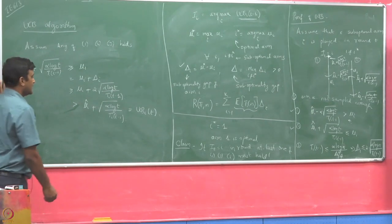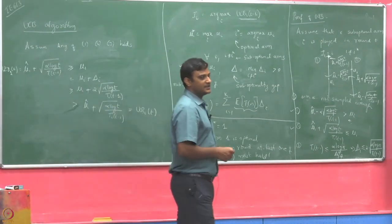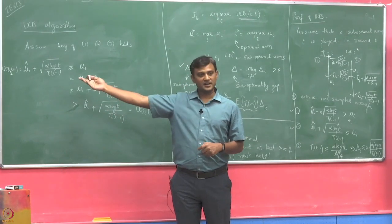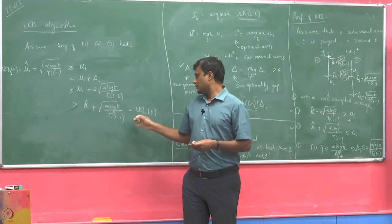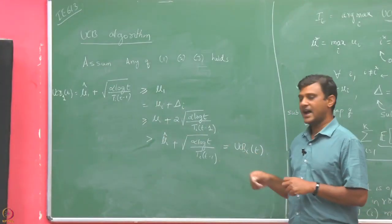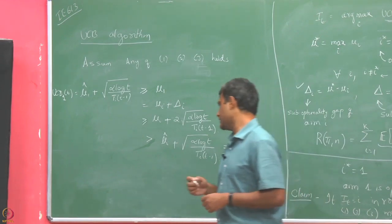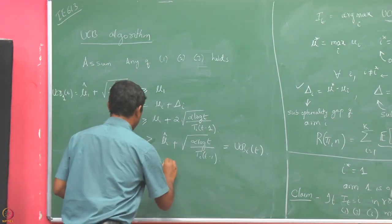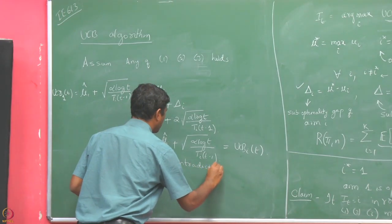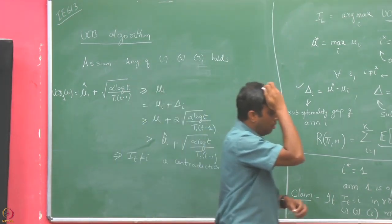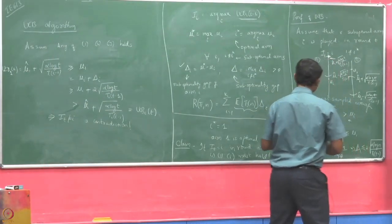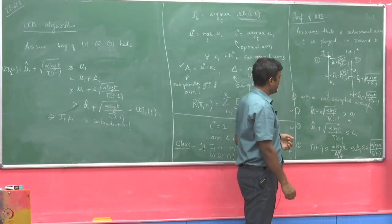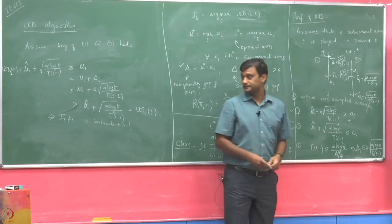Since arm 1's UCB index is strictly higher, arm 1 would have been picked instead. We know for sure that arm i cannot have been played in that round — a contradiction. Therefore, we have proved that if a suboptimal arm i is played in round t, at least one of the three conditions must hold.